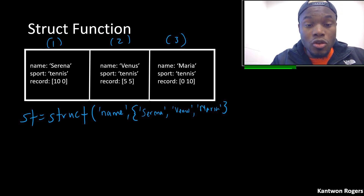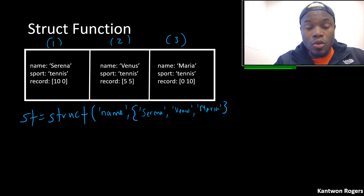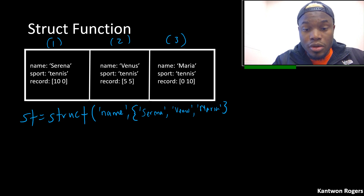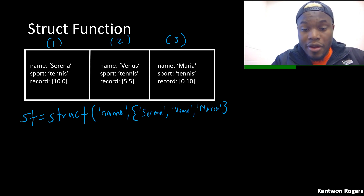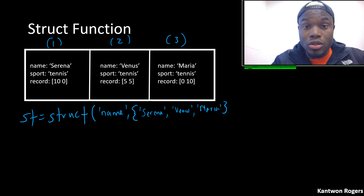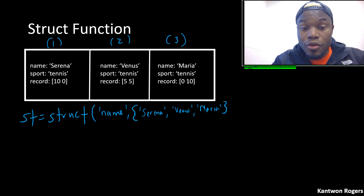A quick way to know the dimensions of your structure array is to look at the dimensions of whatever you have inside of curly braces. Right now this is a horizontal structure array. If I wanted it to be a vertical structure array, I could change the commas to semicolons, making it a vertical concatenation.